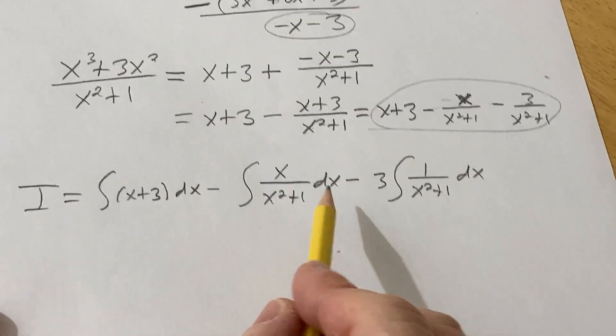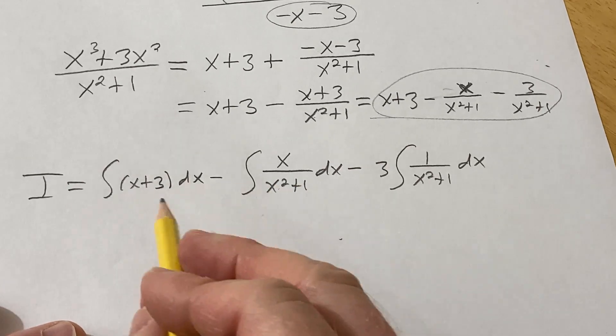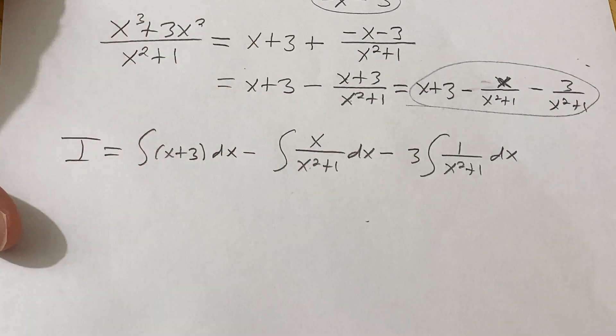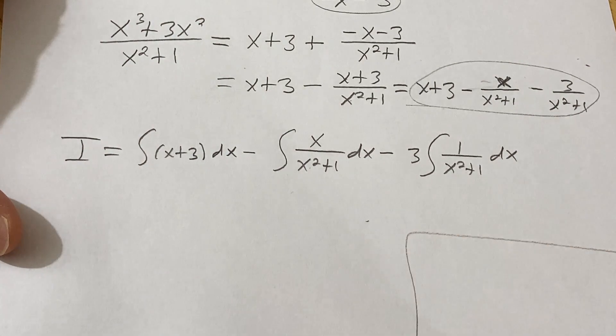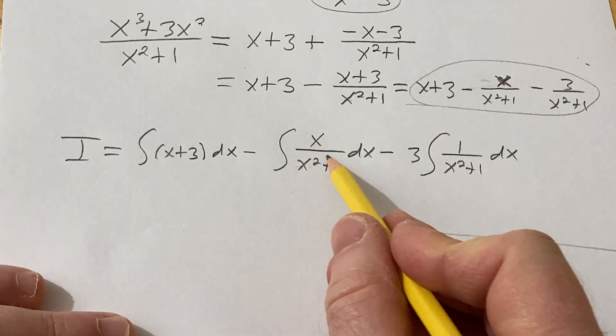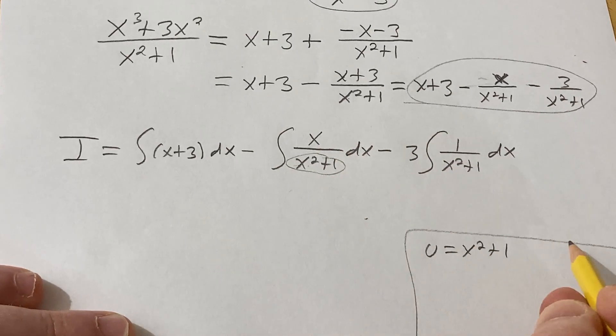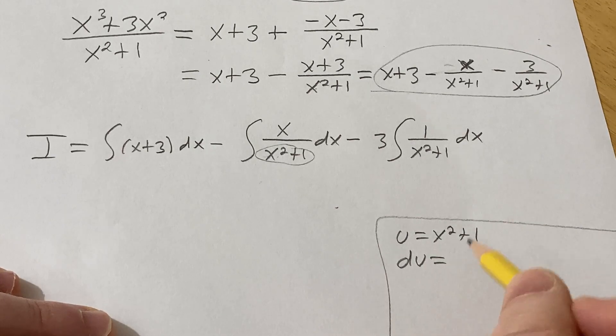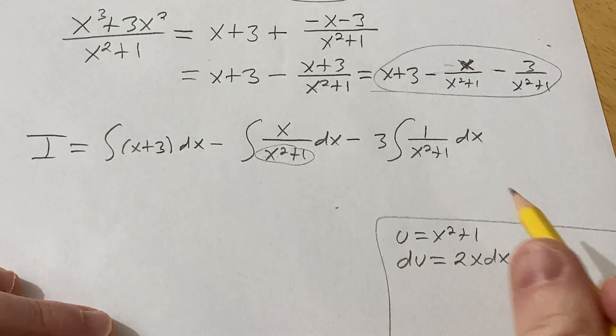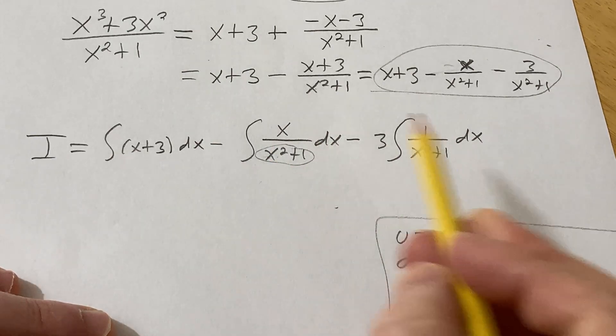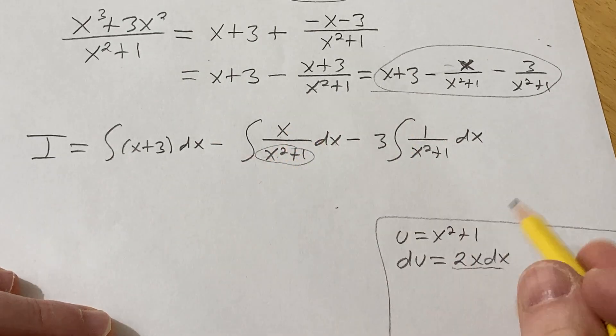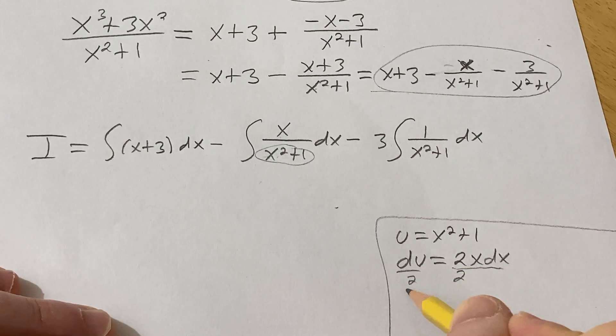The only one that's going to require a simple substitution is this one. So I'm going to go ahead and do that down here on the side. So for this one here, we're going to let u be x squared plus 1. So then du is the derivative of u. It's going to be 2x dx. And this 2x does not appear in the integrand. We're missing a 2. So I'll divide both sides by 2. So we have 1 half du equals x dx.